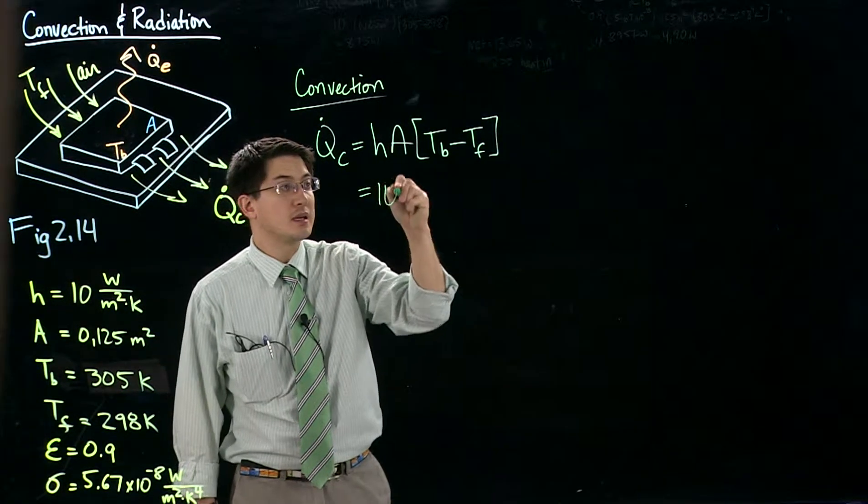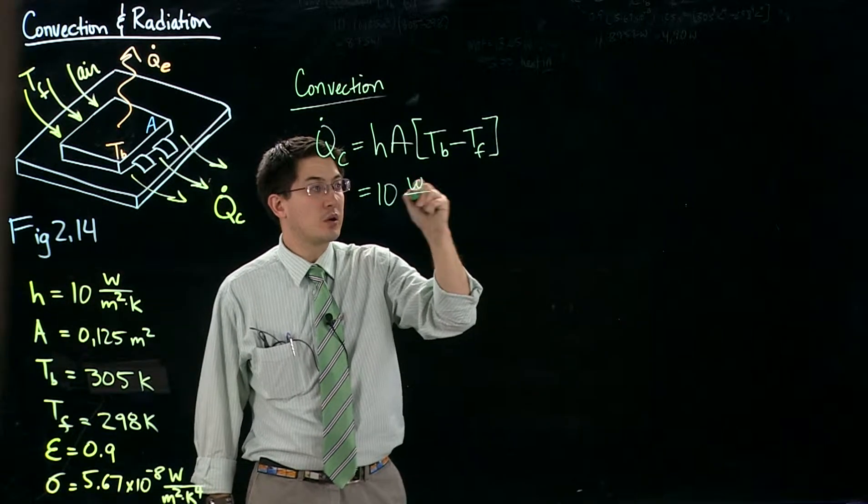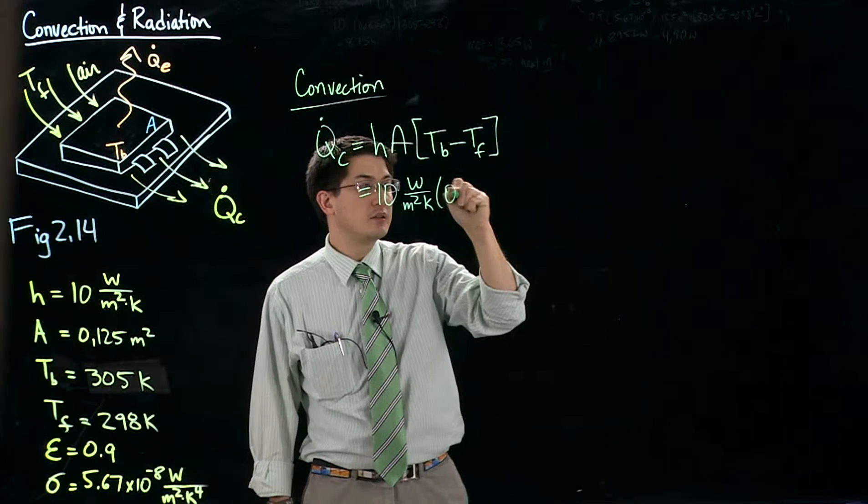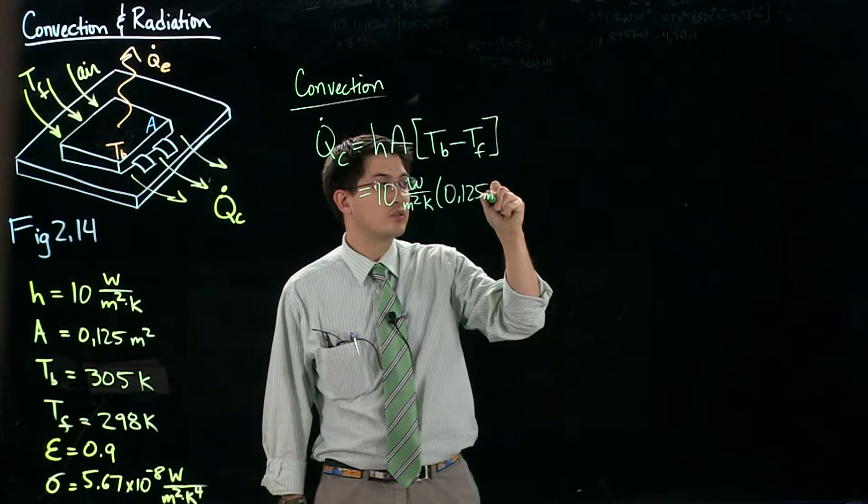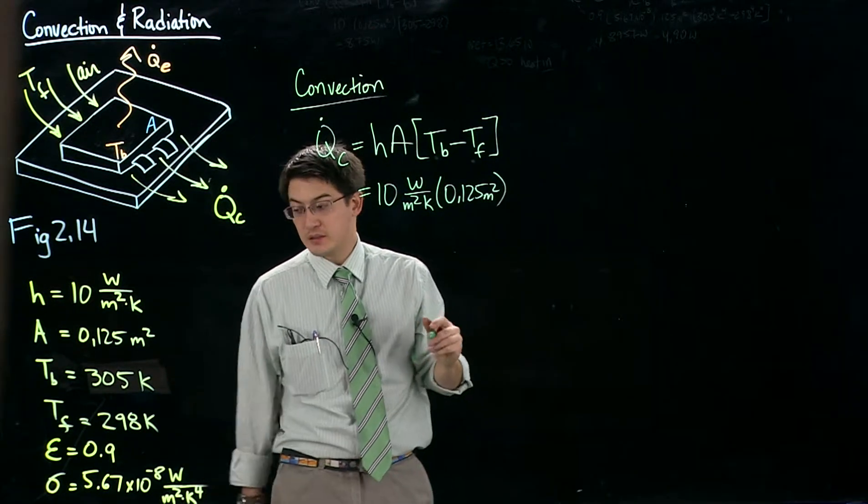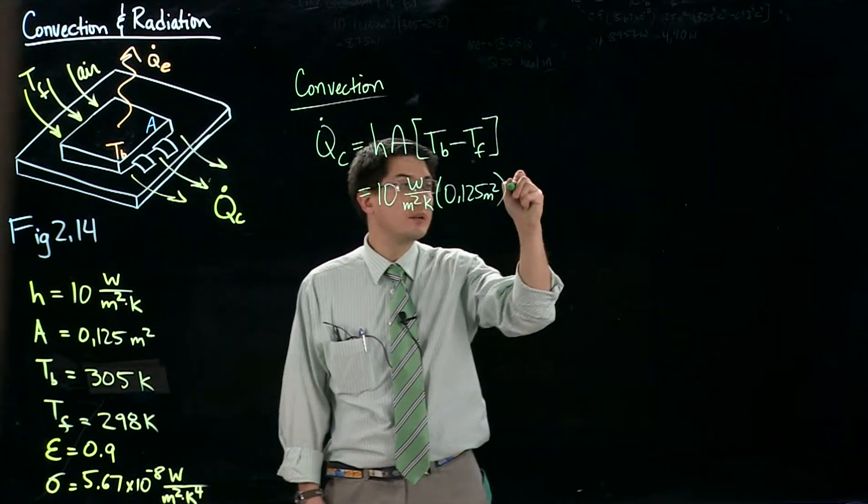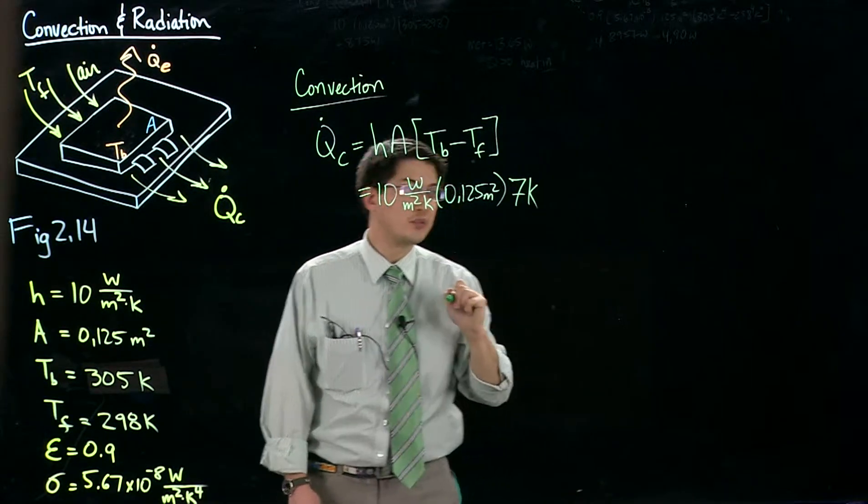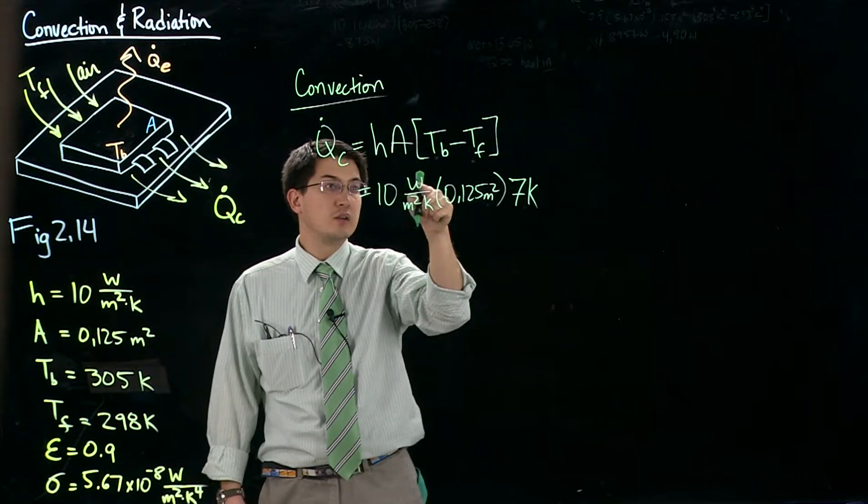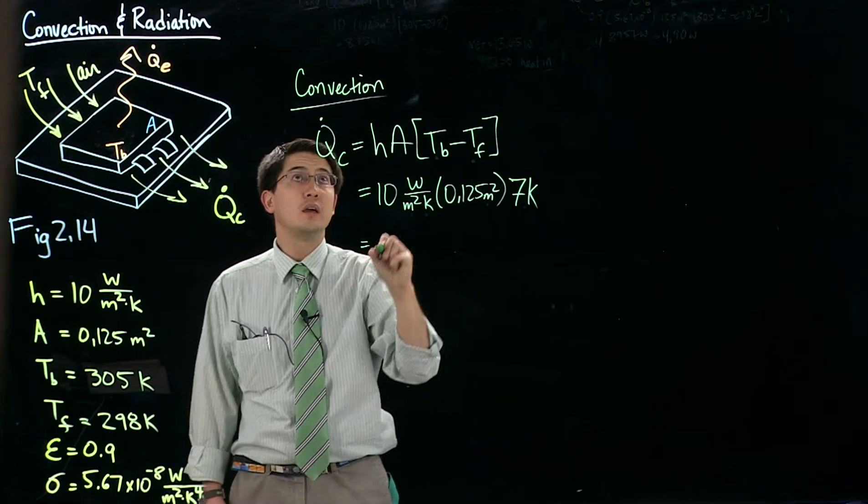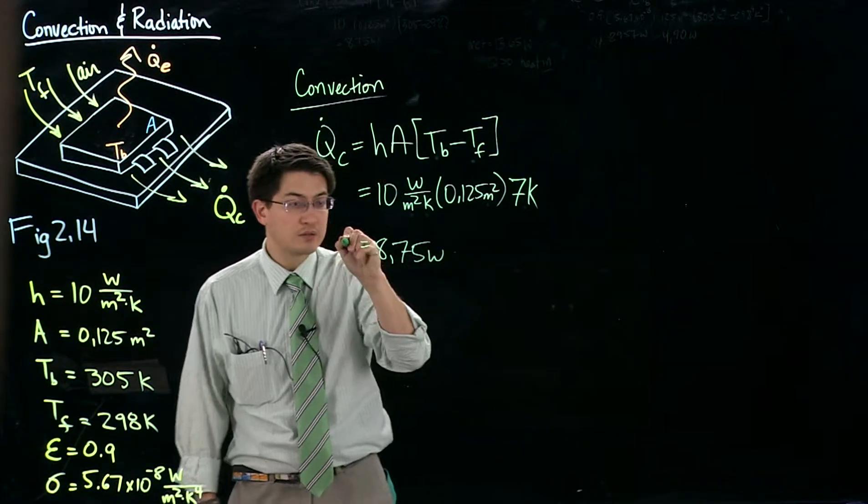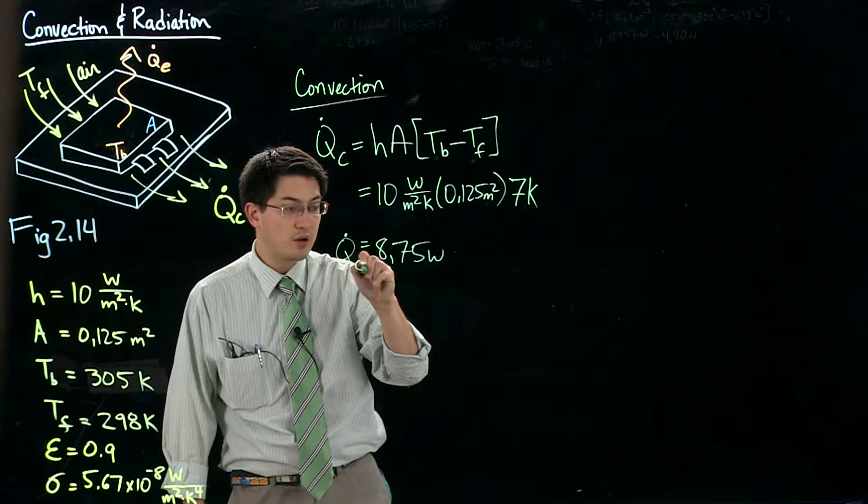We know that h is 10 watts per square meter kelvin. We know that A is 0.125 square meter. And we know that the temperature difference is 7 kelvin. Kelvin crosses out, meter squared cancels out, so we're left with watts. This gives us 8.75 watts for the heat transfer rate for convection.